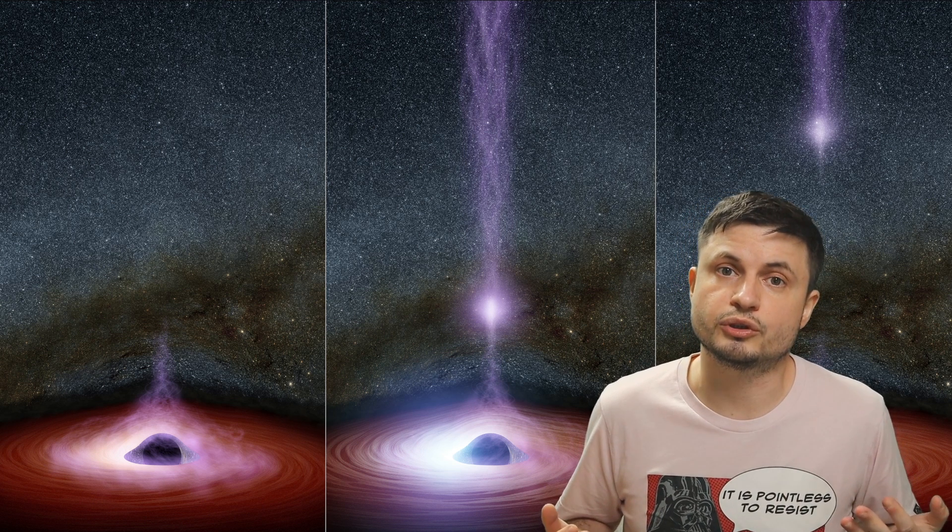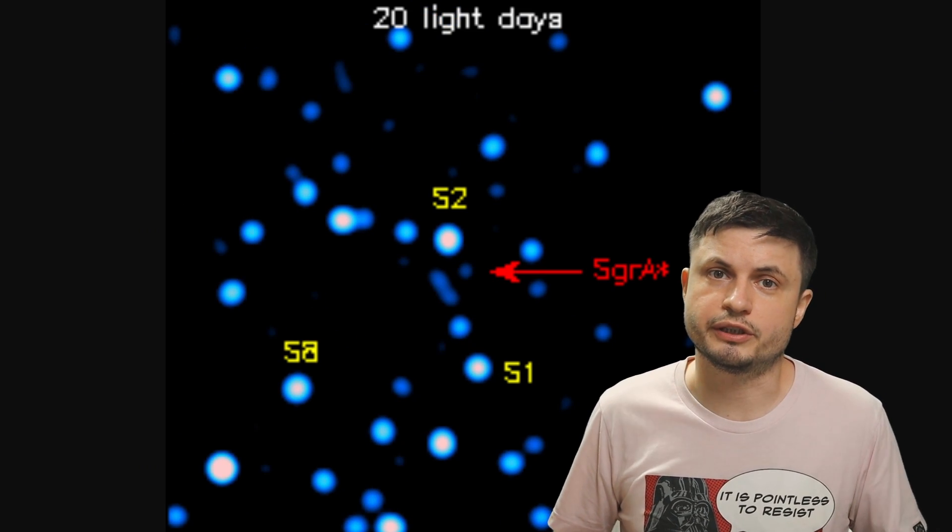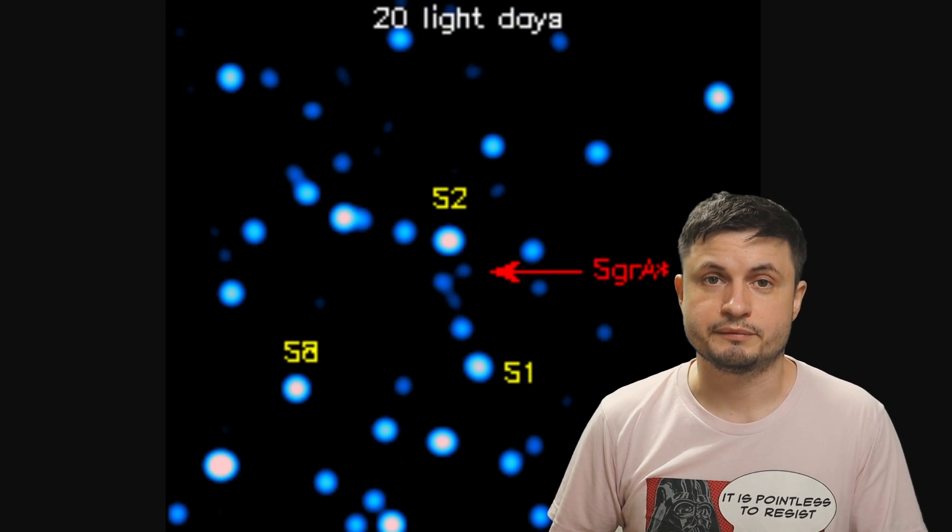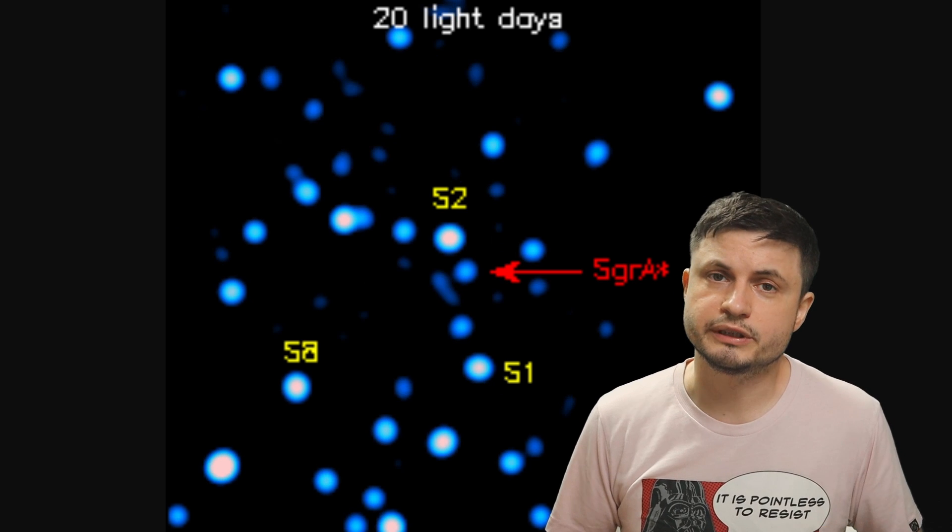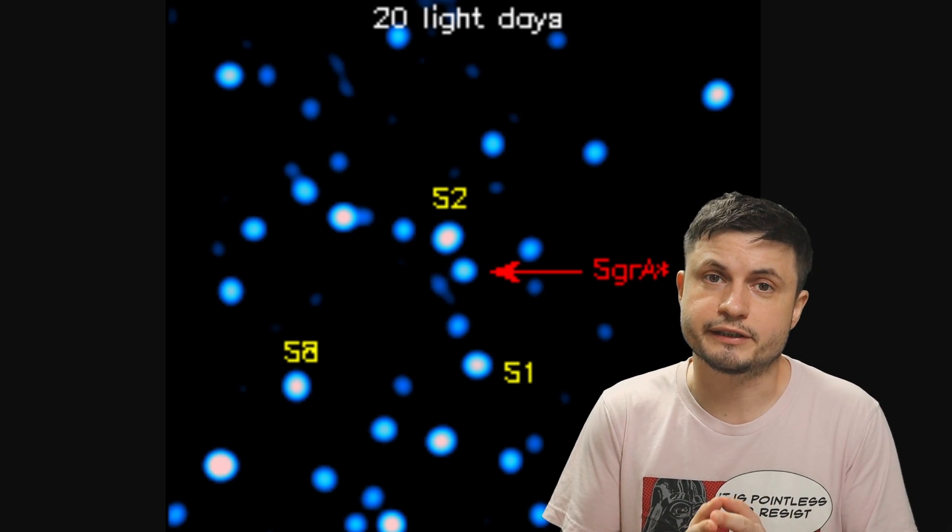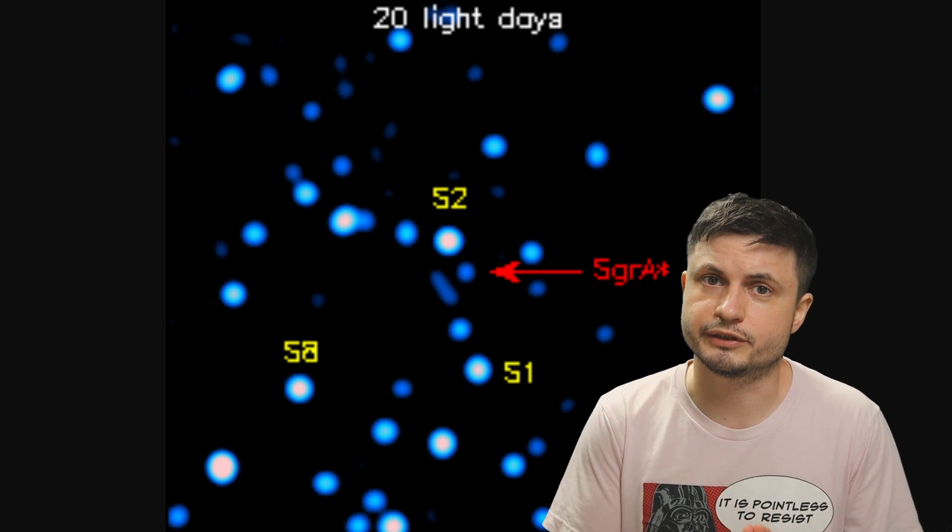Now we do have example of this from Sagittarius A star, the supermassive black hole in the middle of the Milky Way galaxy. We know that there's a lot of interaction of various types of materials in this particular system. We do detect certain flares. One such large flare was detected only a few years ago, and it doesn't really have a very good explanation just yet.